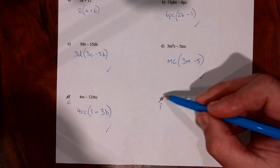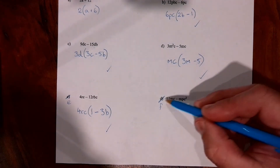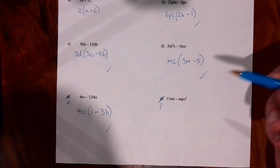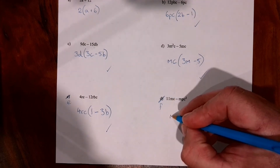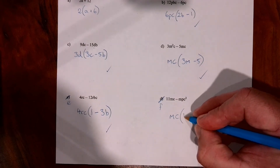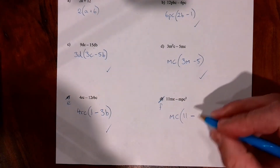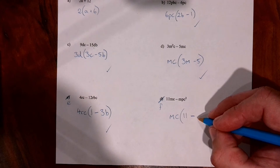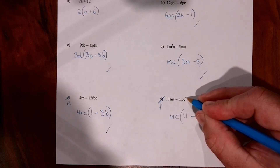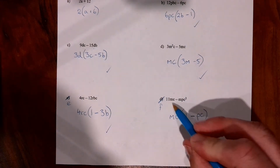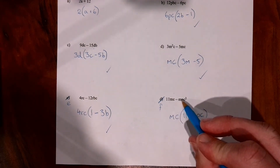Question 6f: looking for common number factors — there's only 1, so we don't worry about that. We take letters out: m's appear on both sides, and c's appear on both sides, so mc goes out the front. That leaves 11 inside for the first term — giving 11mc. For the second term we have minus p, but we also need a c inside because c must multiply by itself to make the c squared in the original. Check: mc times 11 makes 11mc, and mc times negative pc makes negative mpc squared. Correct.